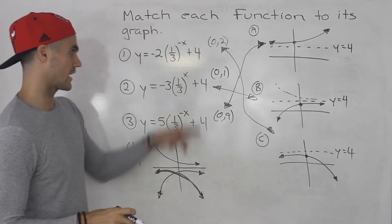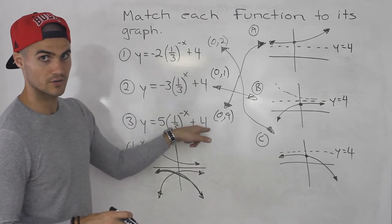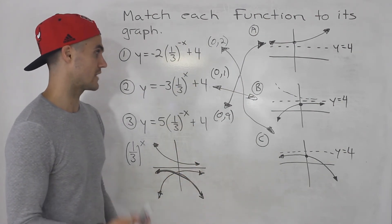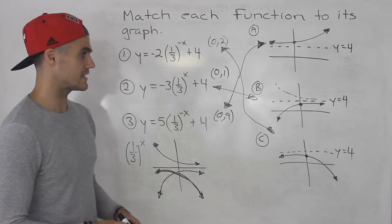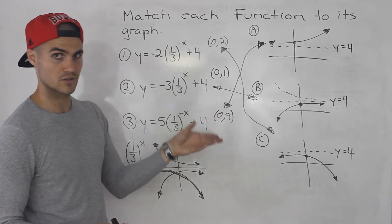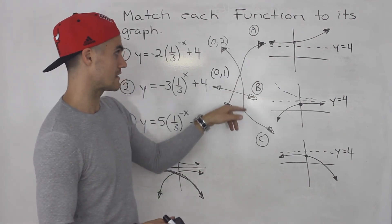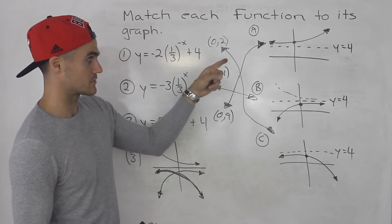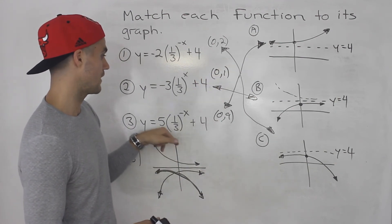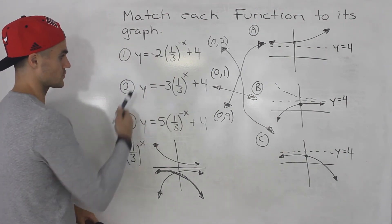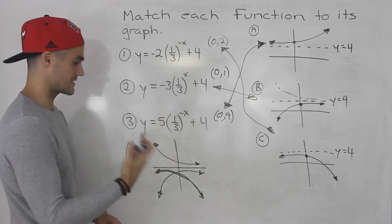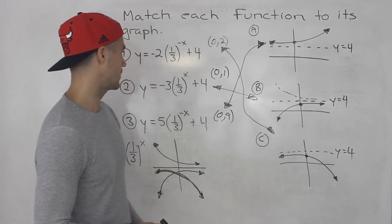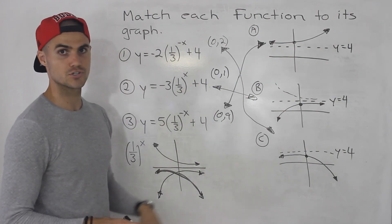So that's how I do these questions. First, look at the horizontal asymptotes — see if there's a unique one to match with the graphs. In this case all had a horizontal asymptote of 4, so that didn't work. Then get the y-intercepts and check them relative to the horizontal asymptote — function 3 was the only one with a y-intercept above 4, so it matched graph A. For functions 1 and 2, I used the parent function 1/3 to the power of x and applied the transformations: function 2 matched graph B, and function 1 matched graph C.